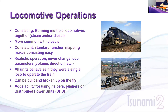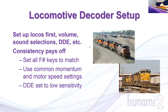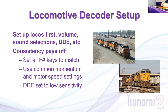Using advanced consisting, you can build it and break it up on the fly, which adds the ability for easy use of helpers, DPUs, and things like that. Now let's talk about setting up your decoder. We've done many webinars and videos on our YouTube channel about setting up locomotives and their features. Consistency is going to pay off — you want to use the same momentum, speed ratings, and brake rates across all locomotives so you have predictable response. You can then take any locomotive and consist it with any other.